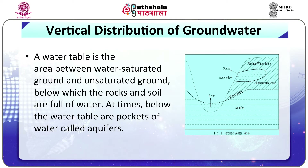Regarding the vertical distribution of groundwater: a water table is the area between the water-saturated ground and unsaturated ground, below which the rocks and soil are full of water. At times, below the water table are pockets of water called aquifers.